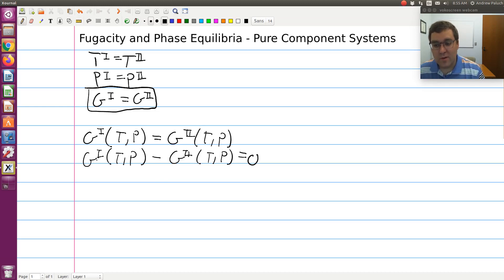So our definition of fugacity is for an isothermal process, the difference in our abstract quantity molar Gibbs free energy is equal to RT log ratio of fugacities. So this would be equivalent to RT log fugacity of phase one at T,P relative to phase two at T,P.